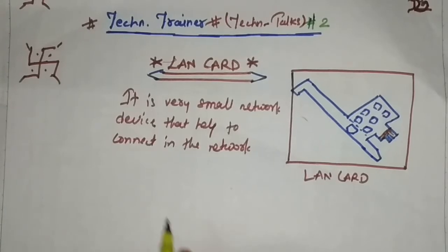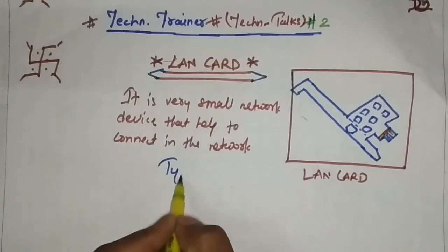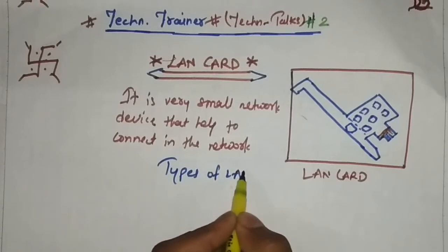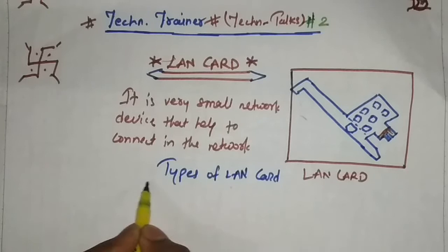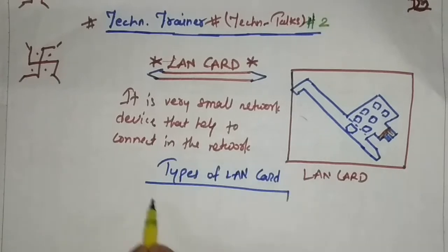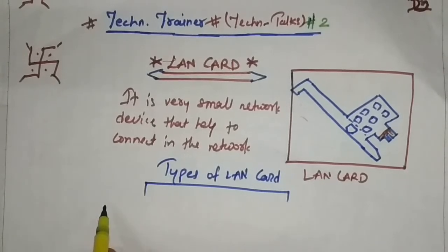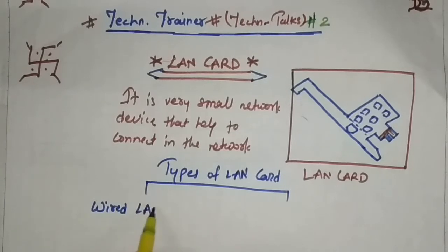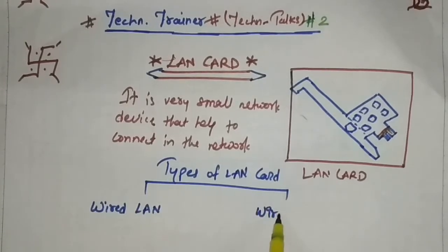Now the types of LAN card: the first is a wired LAN card and the second one is a wireless LAN card.